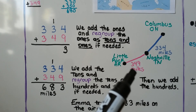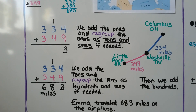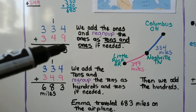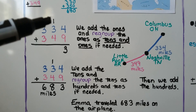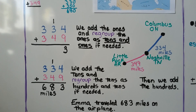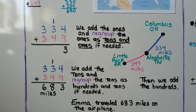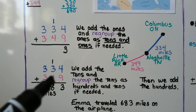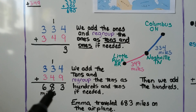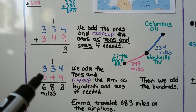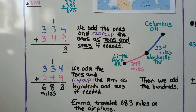We're going to add 334 plus 349 using place value. We start with the ones place: nine plus four is 13, which is one ten and three ones. We regroup the ten into the tens place and write the three in the ones place. We add the tens — one plus three plus four is eight, so no regrouping needed. Then three plus three for the hundreds gives us 683 miles. And 683 is very close to the 680 we estimated, so we know our sum must be correct.